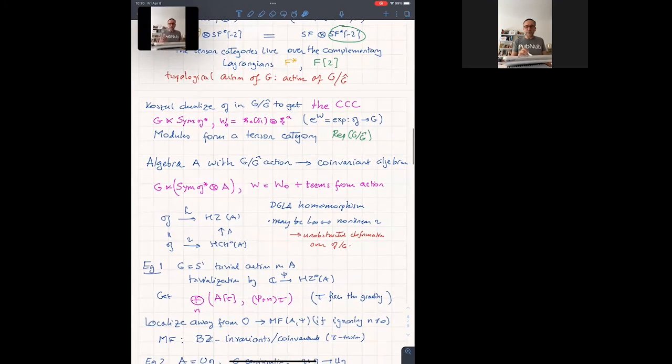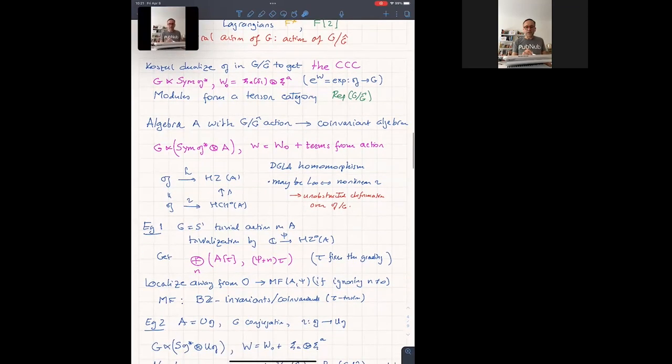And modules over this guy form a tensor category. It's a bit unusual. Usually when you put a super potential, we don't get a tensor category anymore. But in this case, you do because the group, because the algebra law here is convolution, not pointwise multiplication of functions. And that is our model for representation of G more G hat. And from an algebra with G more G hat action, you can build a co-invariant algebra by sneaking that into this curved Cartan complex.